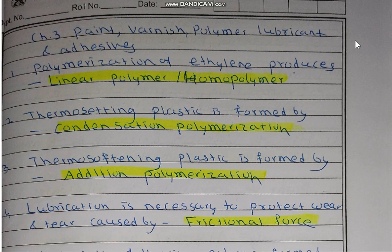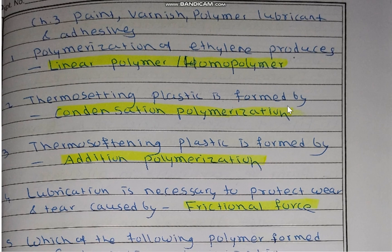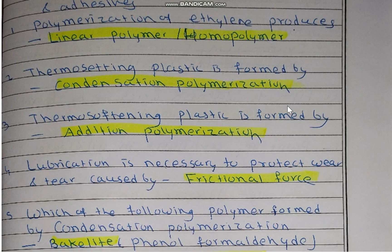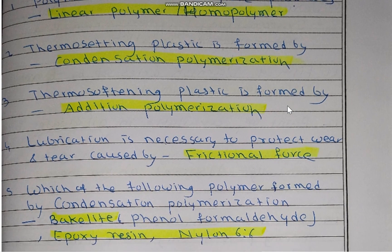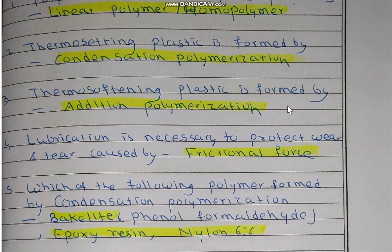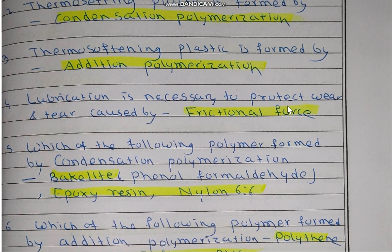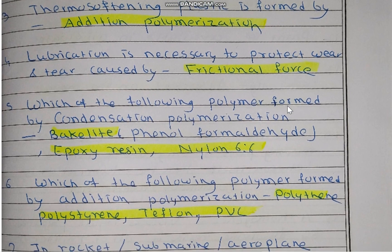That means same type of monomers are present in polymerization of ethylene. Thermosoftening plastics are formed by addition polymerization — that means there is simply joining of the same type of monomer. Thermosetting plastics have no heat effect on this type of plastic, and they are formed by condensation polymerization.